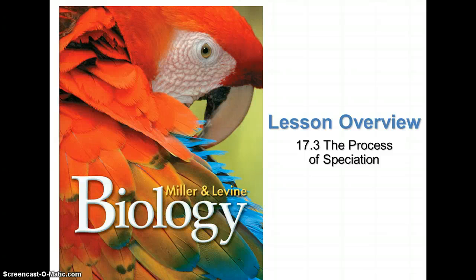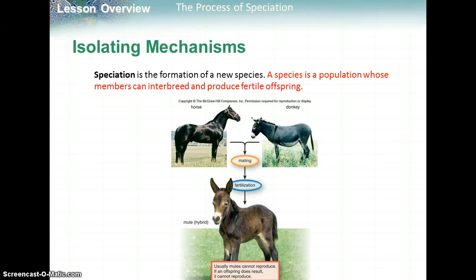We're going to cover both sections 17.3 and 17.4 in this screencast. We're going to be looking at process speciation and molecular evolution. First we're going to talk about how you actually get a new species, or what do we consider a species.